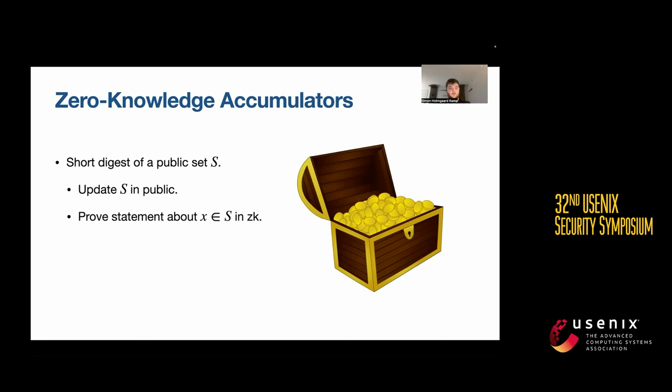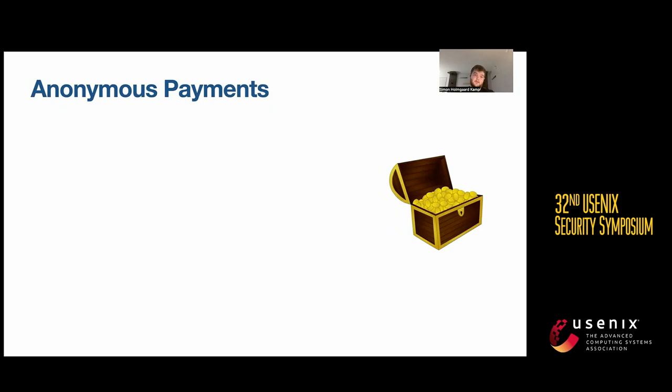A motivation for looking at these accumulators is to instantiate anonymous payments. You might want to show that you own some coin in a set, which you could do by having the coin be a commitment to some value and a nullifier, where this nullifier is something you reveal when you spend the coin, such that you cannot spend it twice.